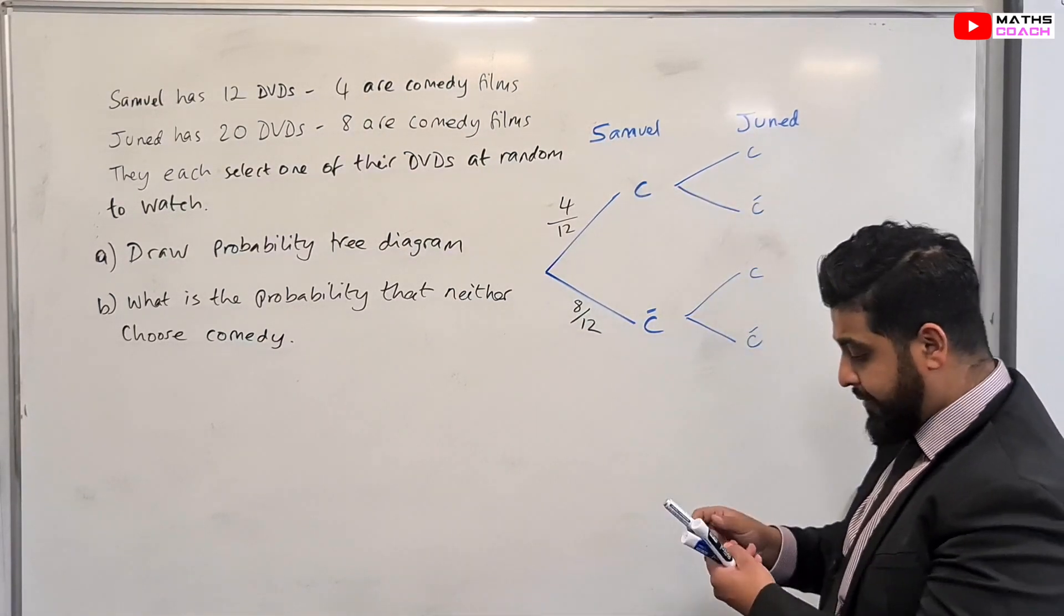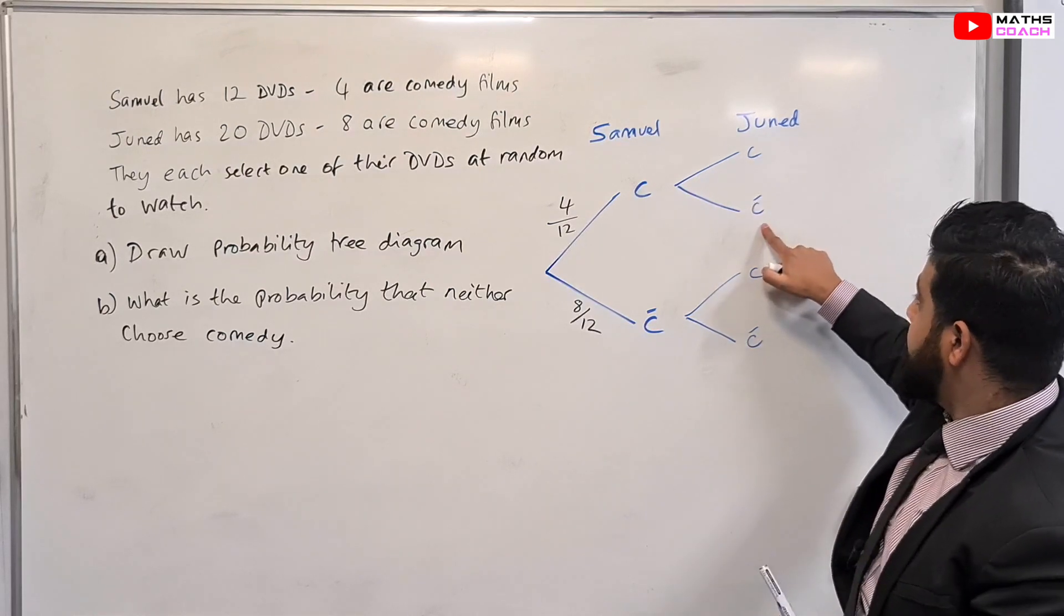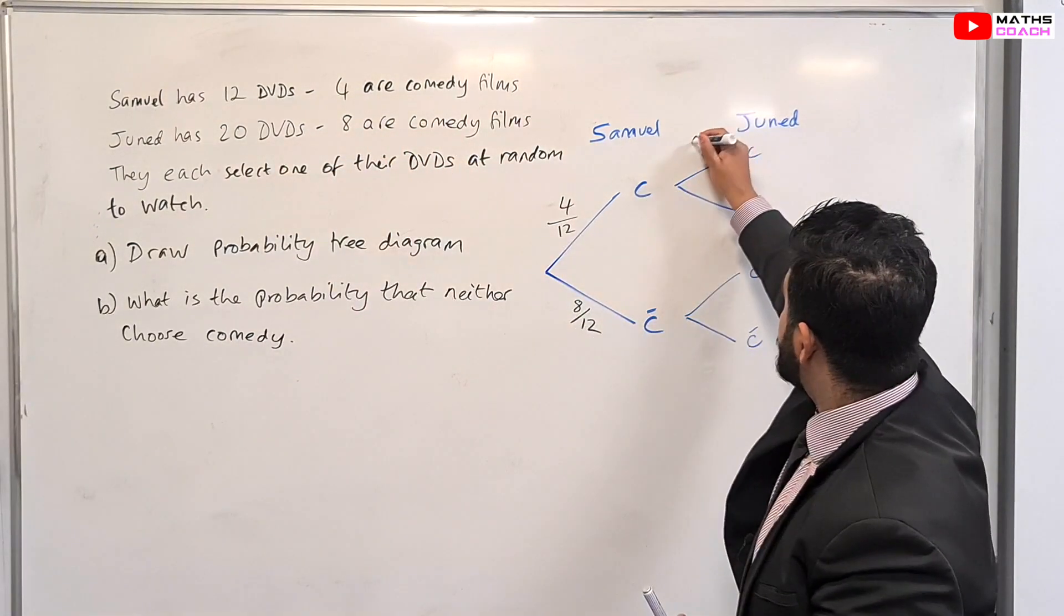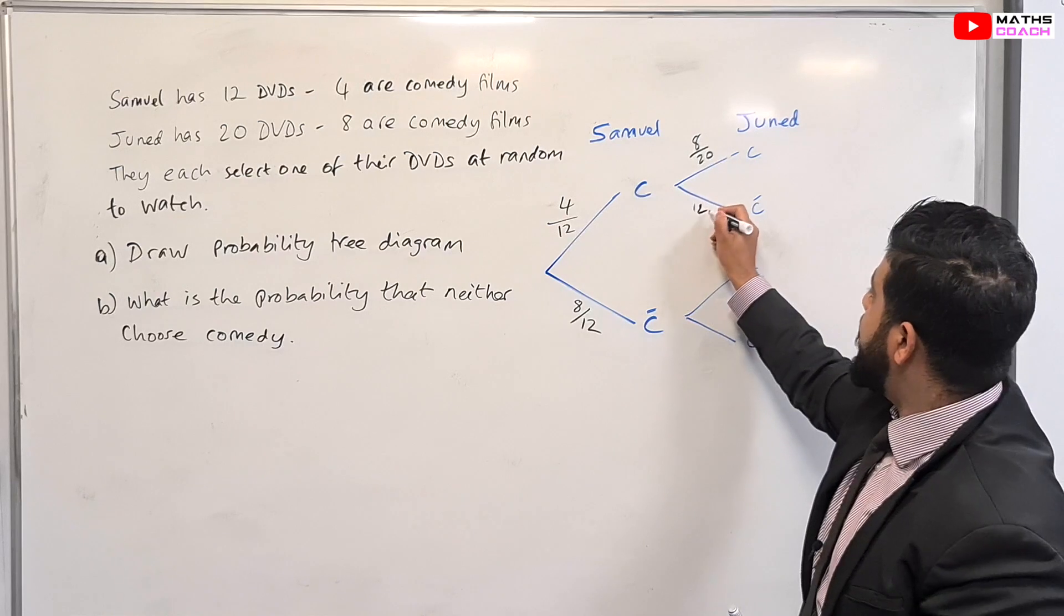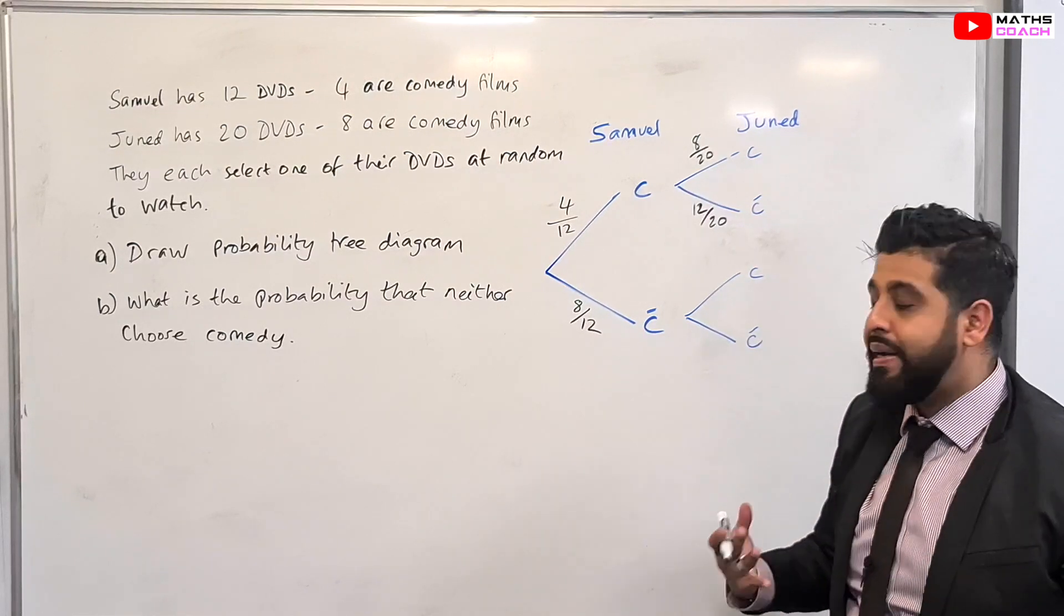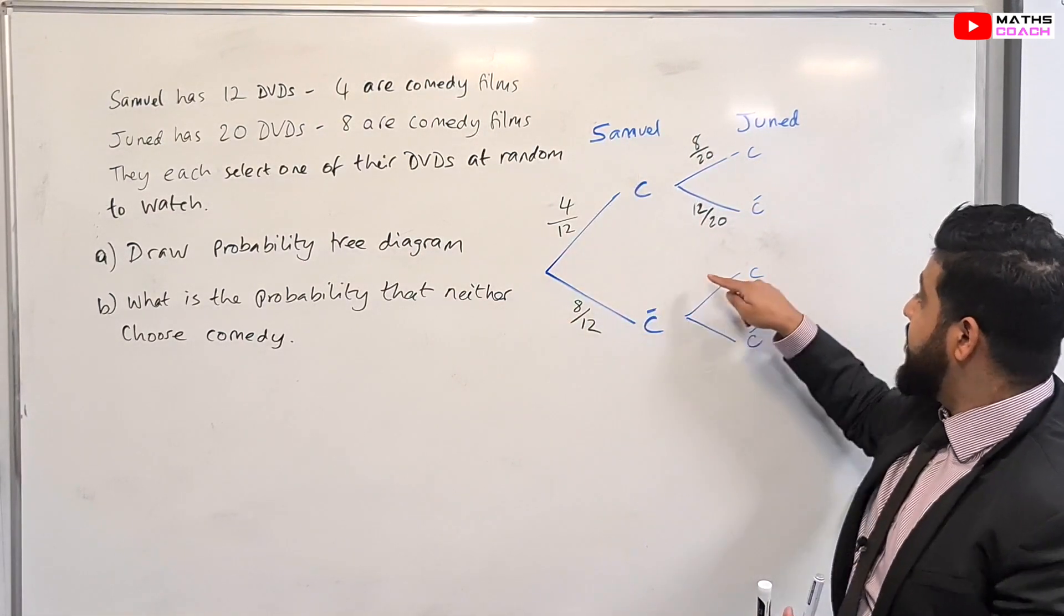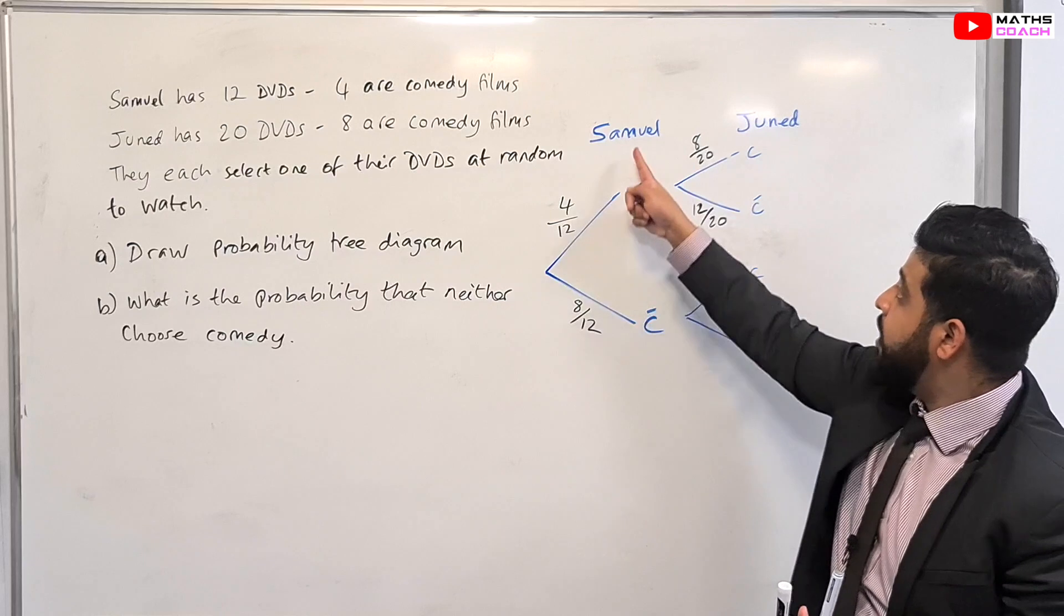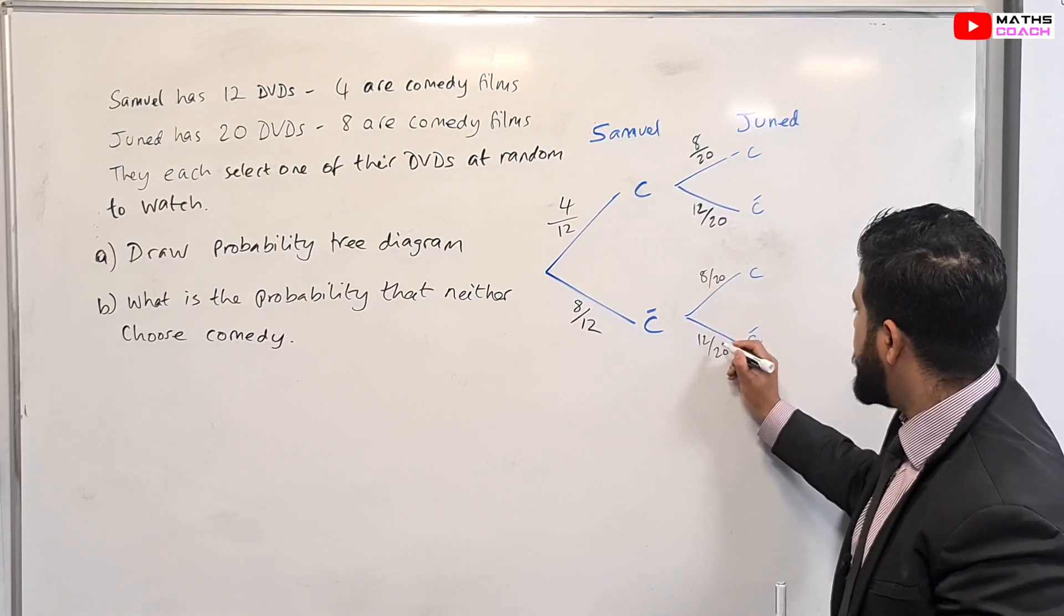Right so let's have a look at this first branch here. What does it mean? It means if Junaid chooses comedy or not. If Junaid chooses comedy he has eight which are comedy films out of his 20 DVDs. So this will be eight out of 20. For Junaid rather not to choose comedy which would be the leftover, so therefore 12 out of 20. Hopefully earlier on I explained to you what is meant by independent. Because Junaid choosing his DVDs are completely independent to what Samuel does, he is going to have the same probabilities represented on his branches for this one as well, which is when Samuel doesn't choose a comedy.